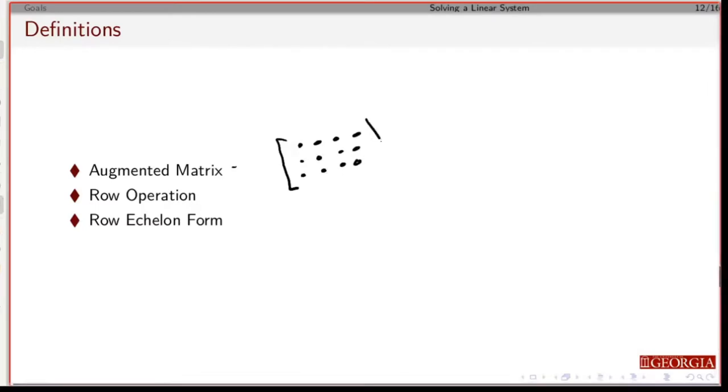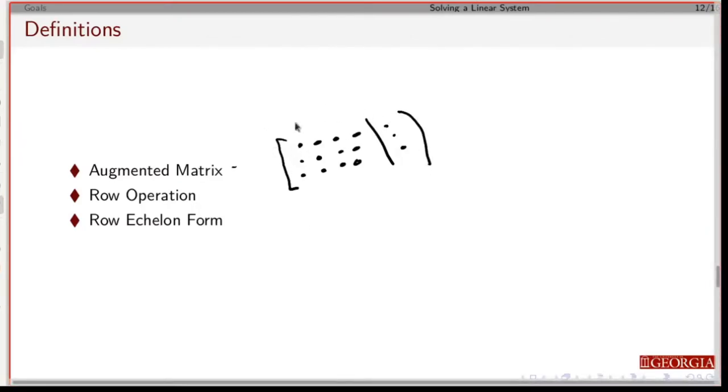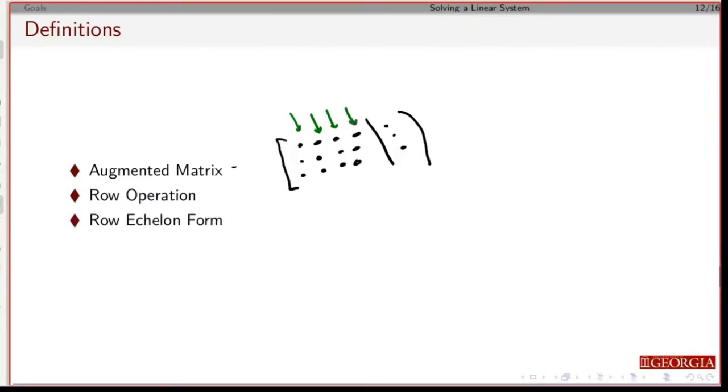You need to be able to take a linear system and put it in this form, recognize what it is and what it means, and recognize that each column is referring to a different variable.